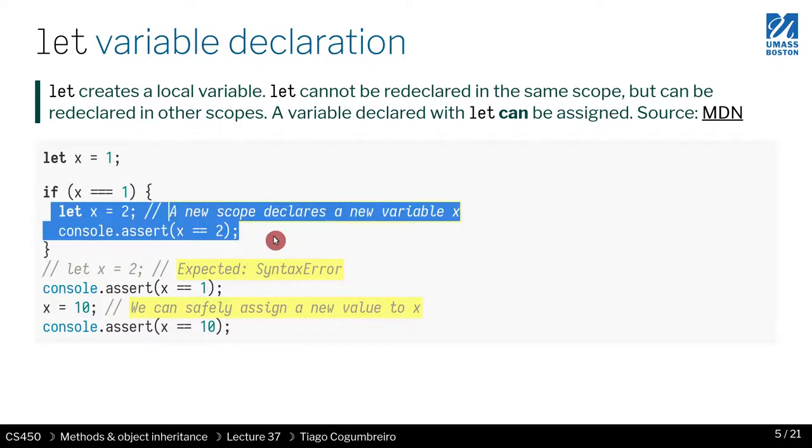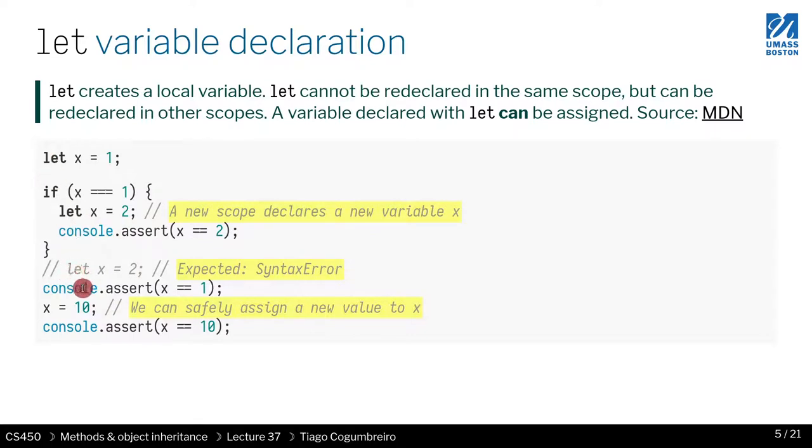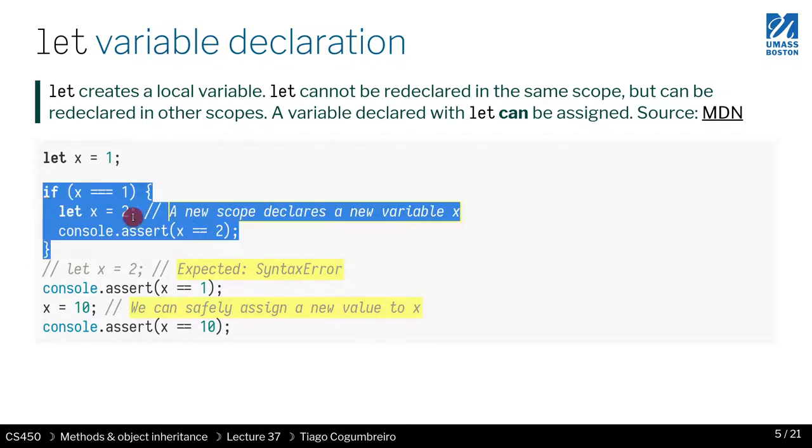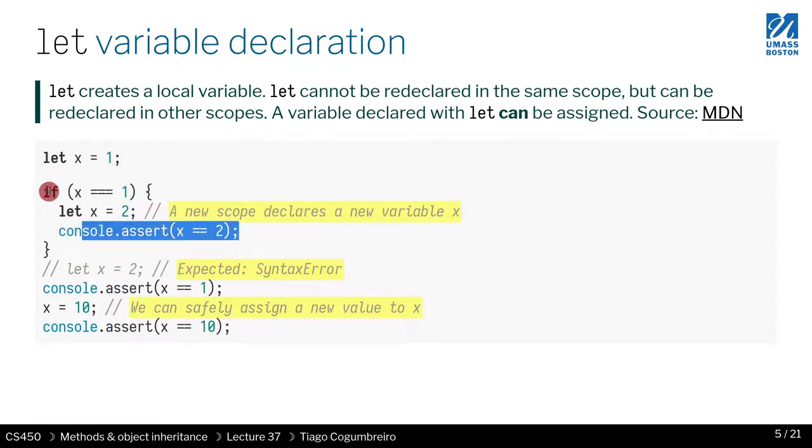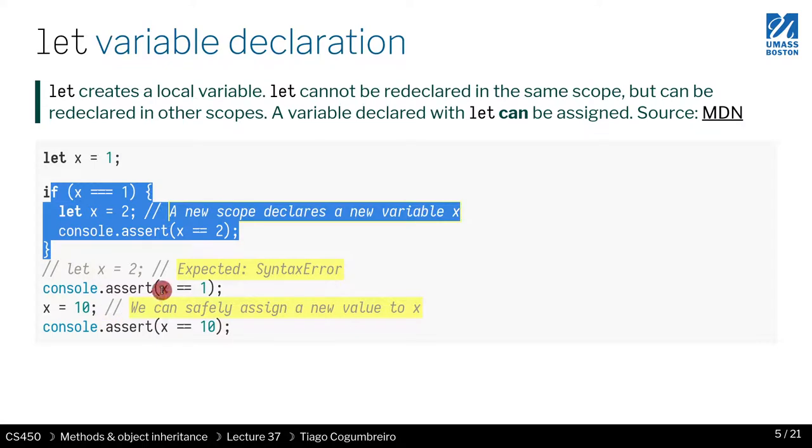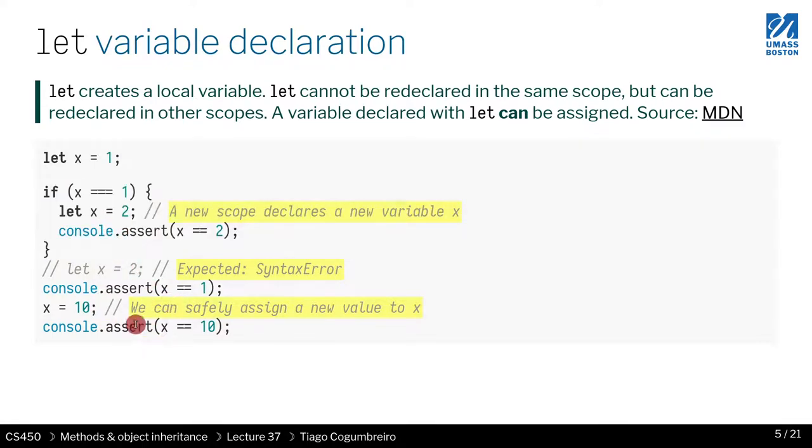But x is not 2 outside. So x is still 1 outside of this branch, which makes more sense. You know, if you want to write some code and you want to reason about it, you don't need to read the whole context. If you're defining x, you know that inside of this it's 2, and whatever happened here should not affect the outside. So this is nice. And you can redefine the variable. So in this case, if I do x equals 10, you can redefine it.